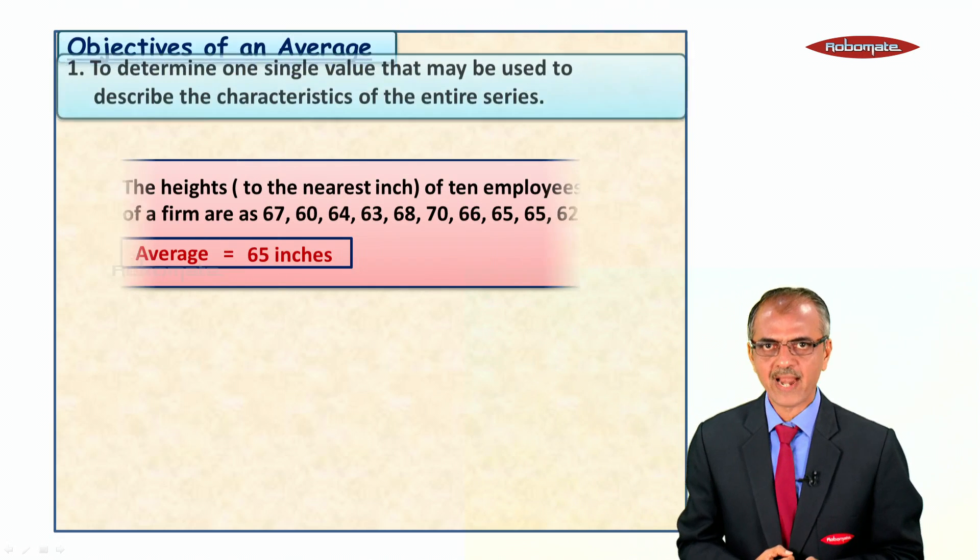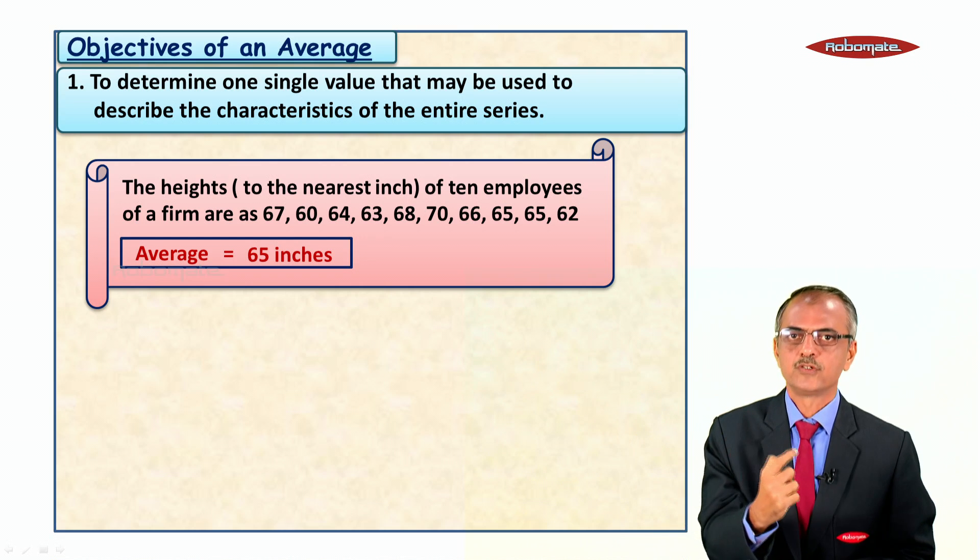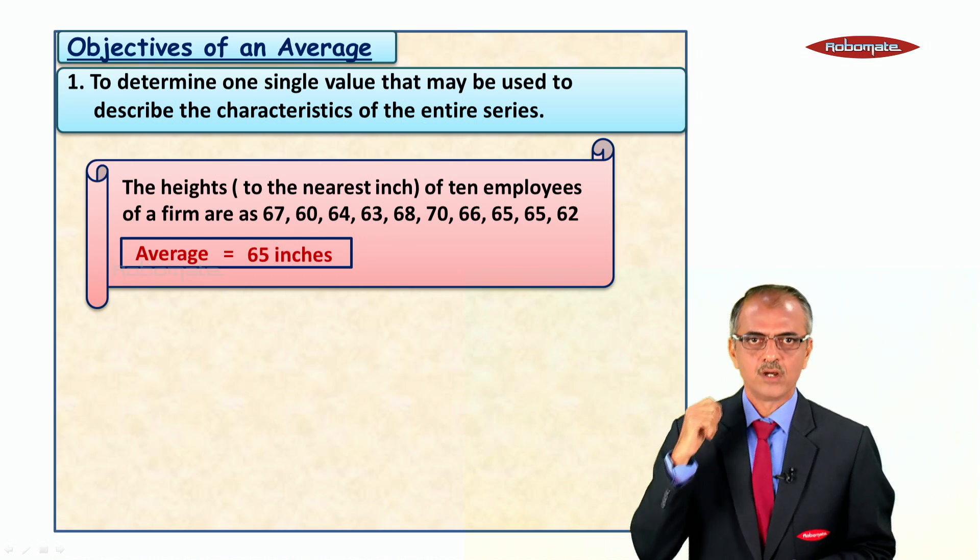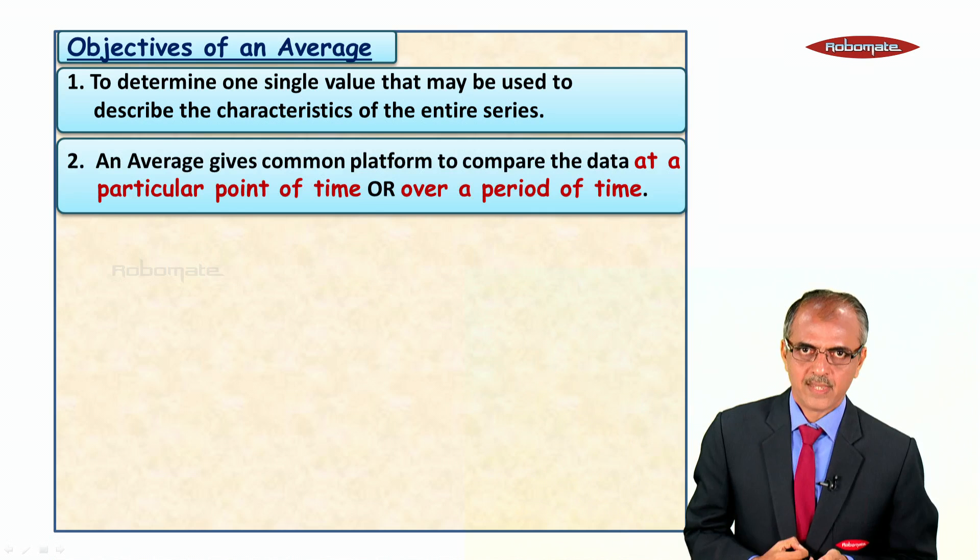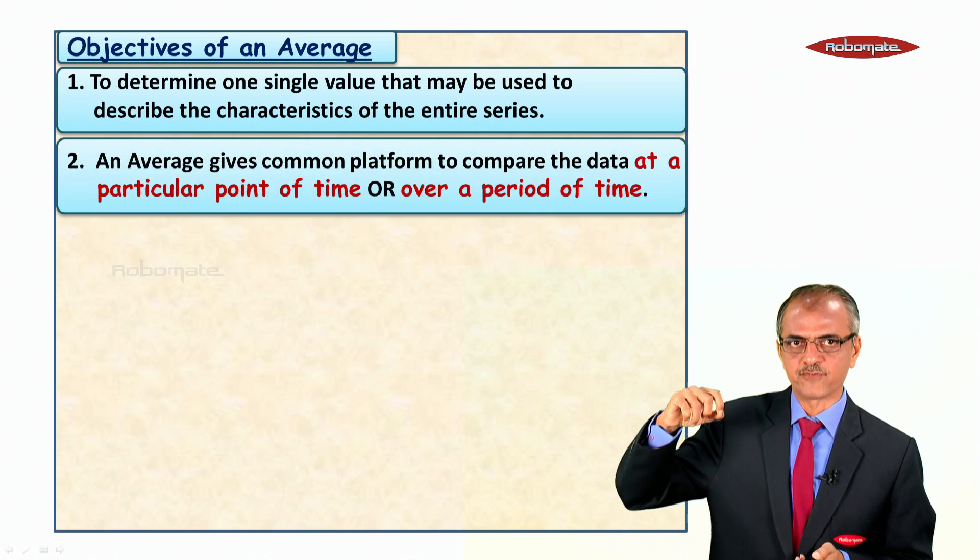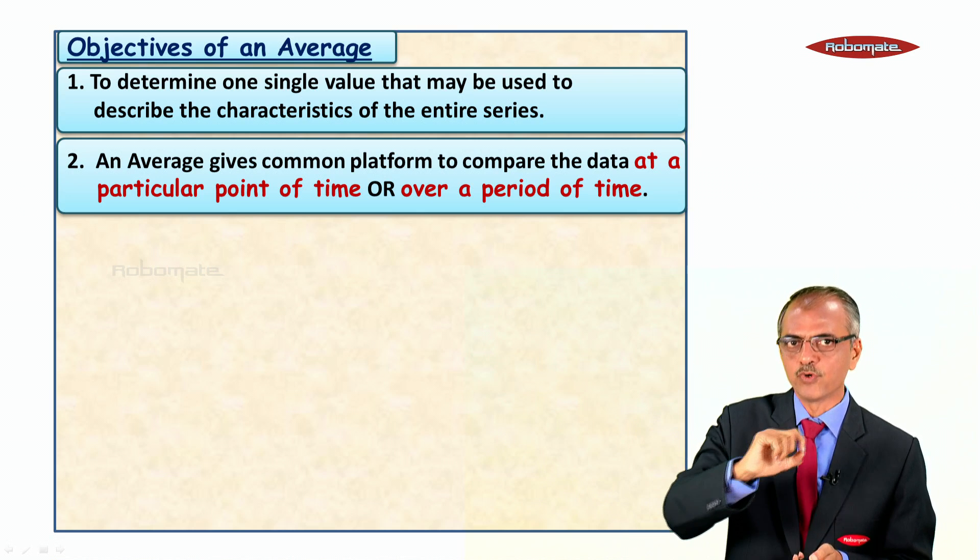Objectives of an average: to determine one single value that may be used to describe the characteristic of the entire series. An average gives a common platform to compare the data at a particular point of time or over a period of time.